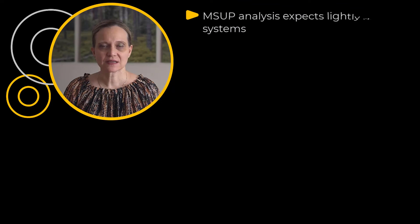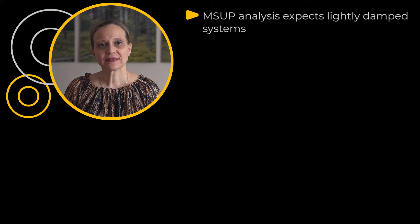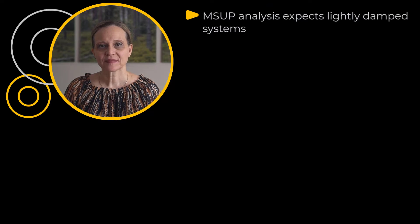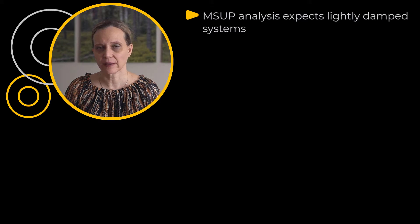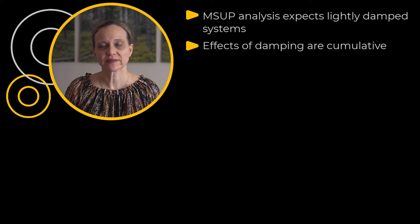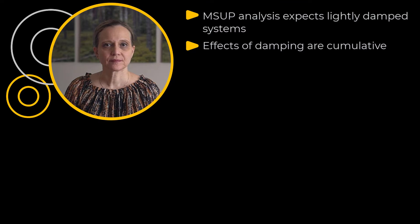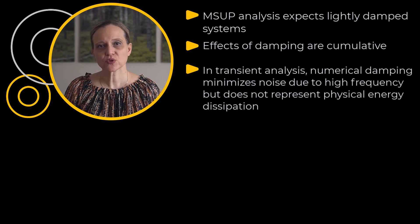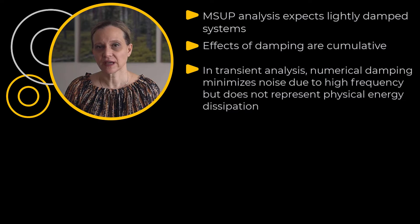There are some important points to keep in mind. Mode superposition analysis expects lightly damped systems. Mode superposition methods typically use the undamped modes, but heavy damping can cause modes and frequencies to change, so the methods described here assume light damping. For harmonic and transient analysis, we do have the full method that can be used in cases with significant damping. Effects of damping are cumulative, so if you specify global damping and one part has material damping, that part sees the effects of the sum of material and global damping. For transient analysis, there is also numerical damping used to minimize noise produced by high-frequency content of the structure, and this is not reflective of a physical energy dissipation process.